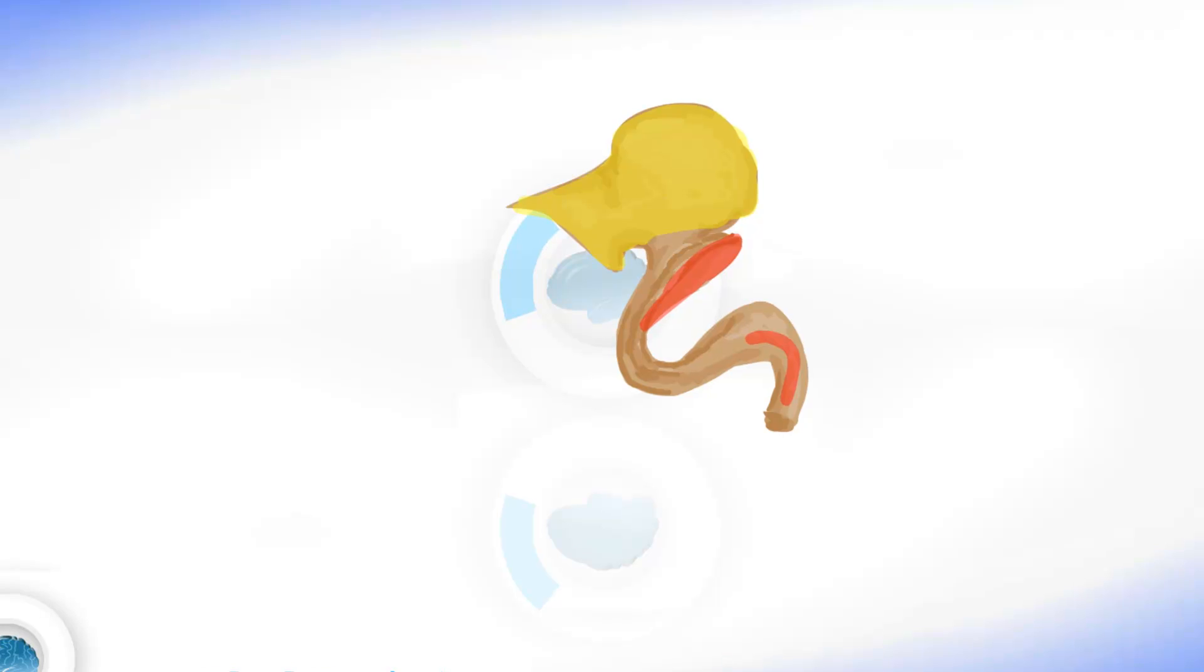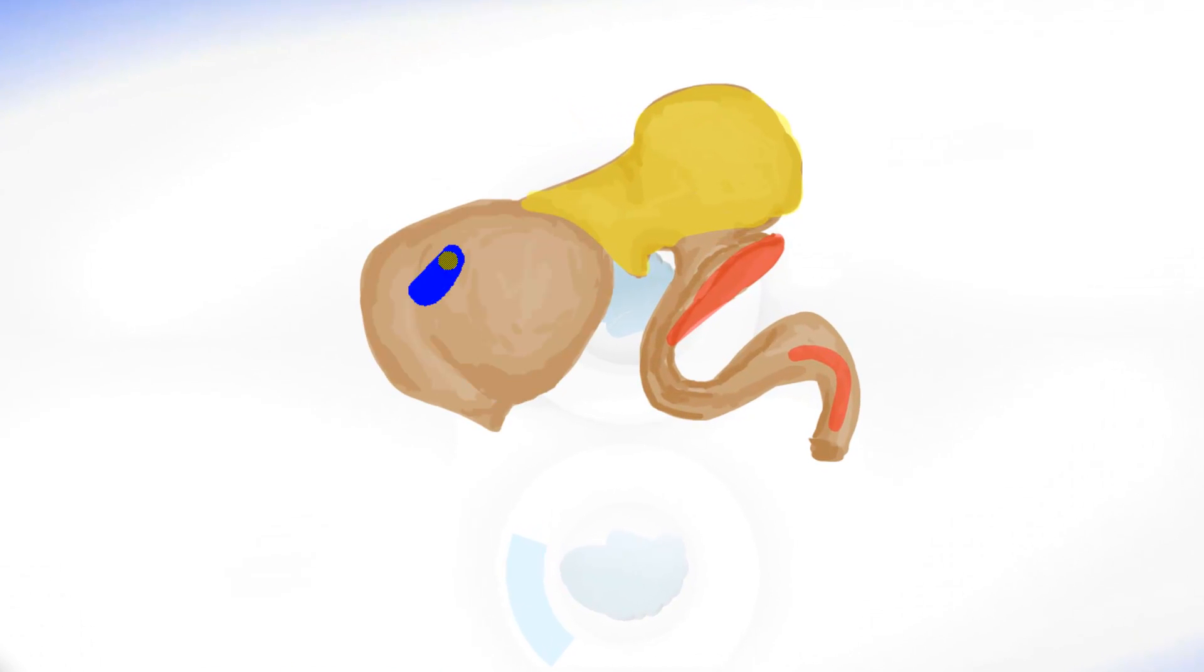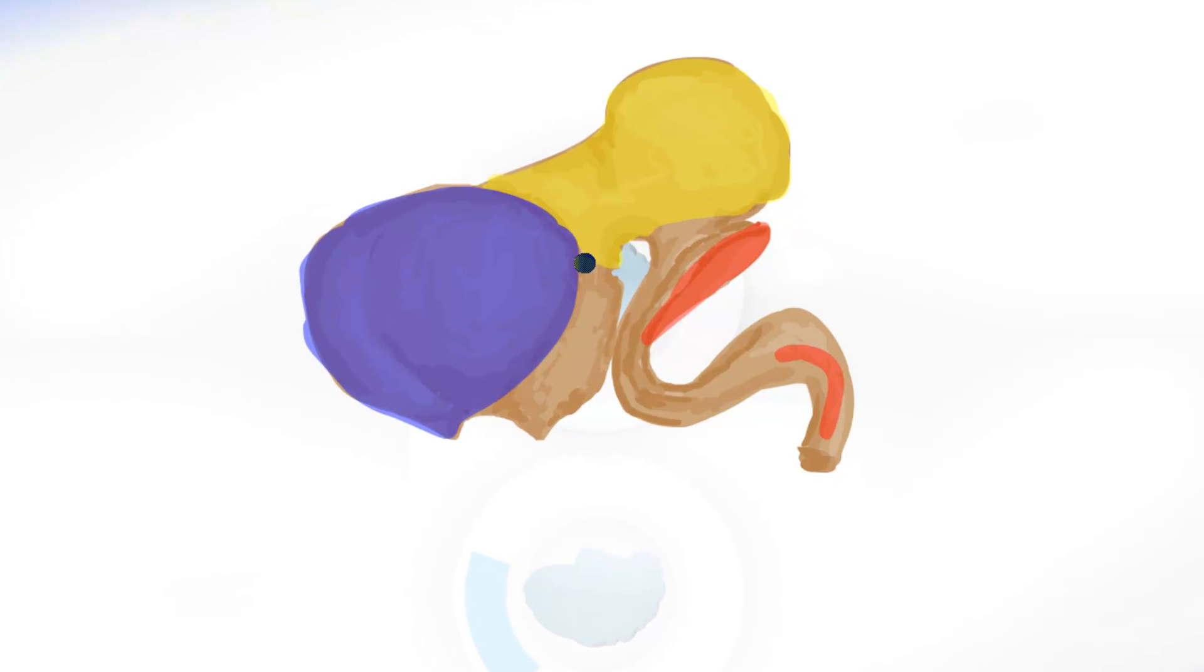Then the diencephalon got much bigger. I will paint it in blue. Then there is the telencephalon here. I will paint it in green. As you can notice the diencephalon and telencephalon got way bigger than they were.